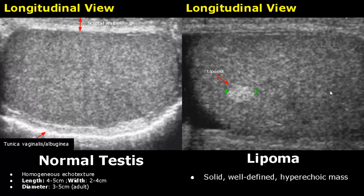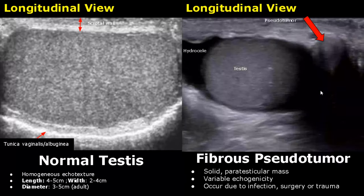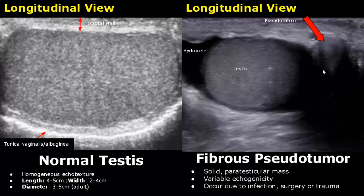A lipoma in a testis will appear as a well-defined hyperechoic mass without any posterior acoustic shadowing. Fibrous pseudotumor is found outside the testis as a solid mass with variable echogenicity. We can distinguish it from tumors and cancers by looking at the cause — it occurs due to infection, surgery, or trauma.